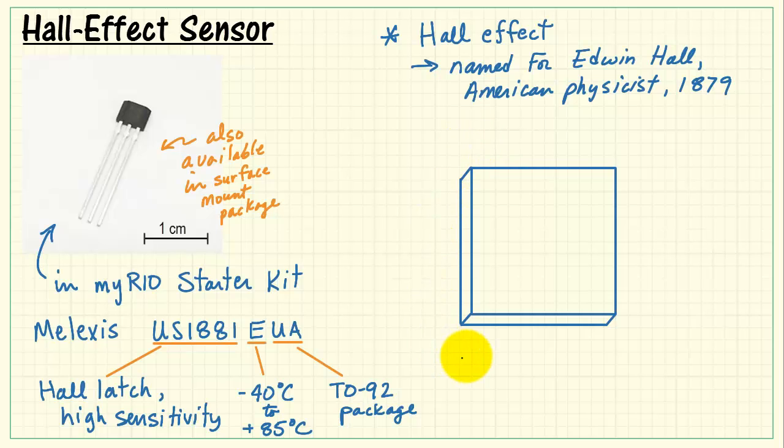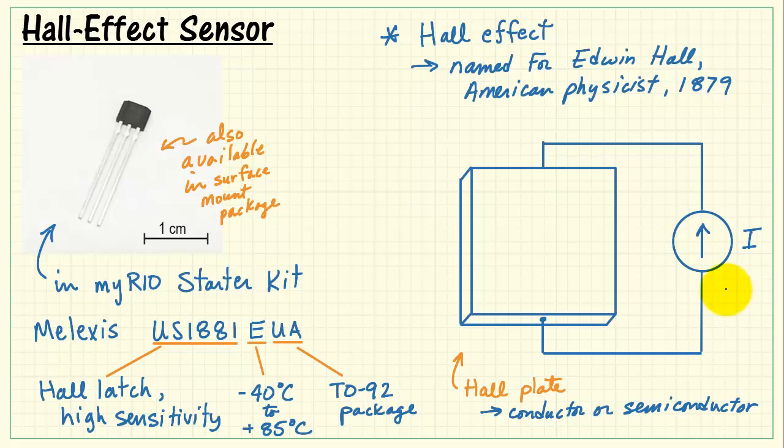Take a small piece of material, a conductor or semiconductor material that we call the Hall Plate, sometimes also called a Hall Cell. Then I'm going to use an external current source to force a current through the Hall Plate. Now inside the plate, we know that there's going to be an electron drift that's associated with this circulating current.